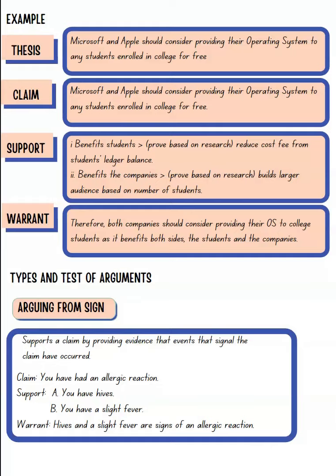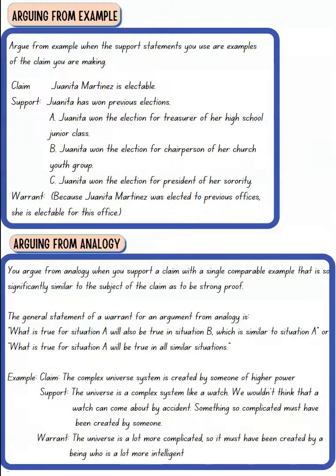There are different types of arguments. Arguing from sign means your support consists of signs or symptoms. For example, your claim is that you are having an allergic reaction. Your support would be the signs: you have hives and a fever. The warrant concludes that because you have these two signs, you have an allergic reaction.